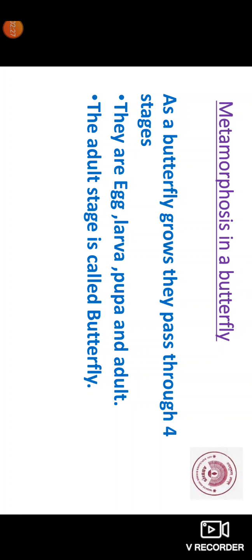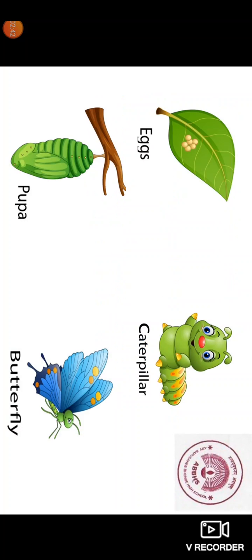Let us study in detail what is metamorphosis in butterfly. As the butterfly grows, it passes through four stages. They are egg, larva, pupa and adult. The adult stage is called butterfly. Here is the image of egg, larva, pupa and butterfly.